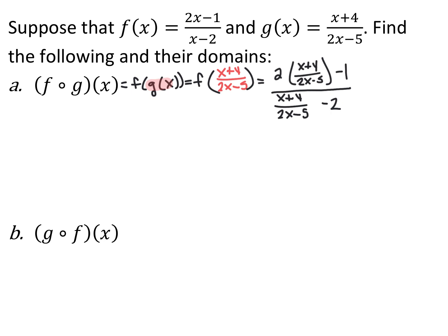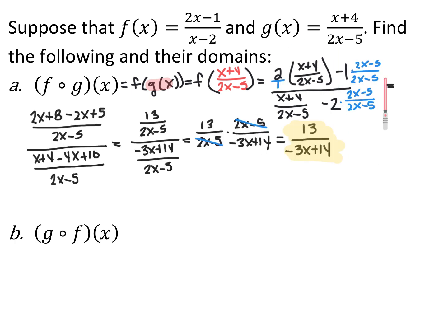Now we have a complex rational expression. Using common denominators of 2x minus 5, the negative 1 and negative 2 each get multiplied by 2x minus 5 over 2x minus 5. Multiplying through, the numerator becomes 2x plus 8 minus 2x plus 5 over 2x minus 5, and the denominator becomes x plus 4 minus 4x plus 10 over 2x minus 5. Combining like terms gives 13 over 2x minus 5, over negative 3x plus 14 over 2x minus 5. Using keep-flip-change, the 2x minus 5s cancel, and you end up with 13 over negative 3x plus 14. Whenever you get a fraction over a fraction with the same denominators, those denominators will always cancel.